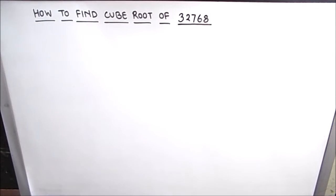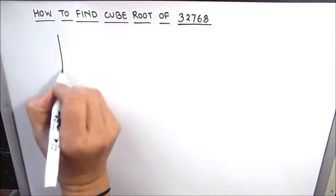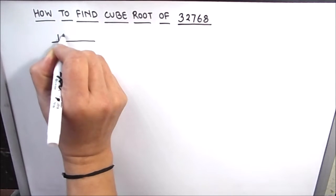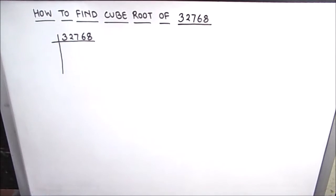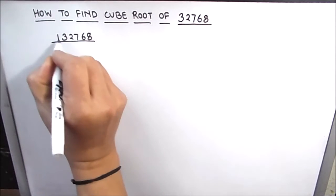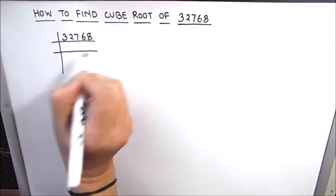Hello everyone. In this video we are going to learn how to find the cube root of 32768 using the prime factorization method. In prime factorization method we write the number and divide it by its prime factors. Factors are numbers which divide the number fully without leaving a remainder, so we divide by prime numbers where we get no remainder.